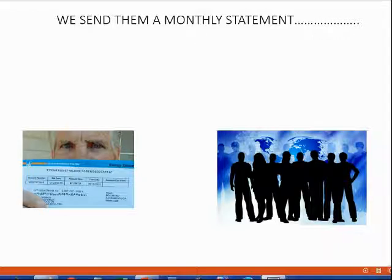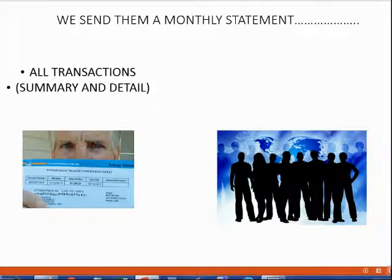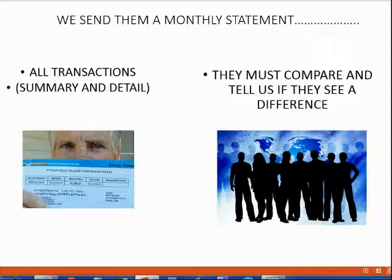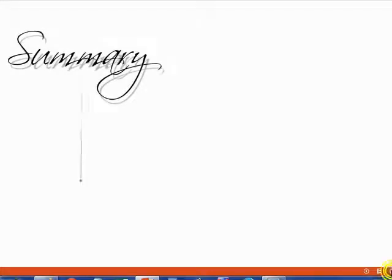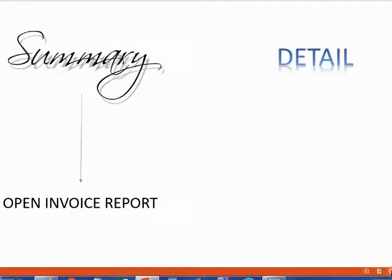Every month we are required to send the customers a statement. The statement is both a summary and a detail. The summary shows the invoices that remain unpaid, and the detail is a list of every single transaction we had with the customer since the last statement. The customers are required to look at the statement and tell us if they see a difference. In the customers and receivables section of our records, the summary report is the open invoice report, and the detail report is the customer balance detail.